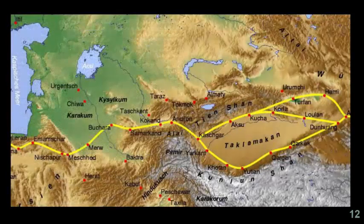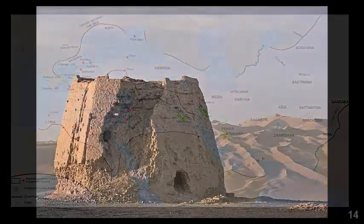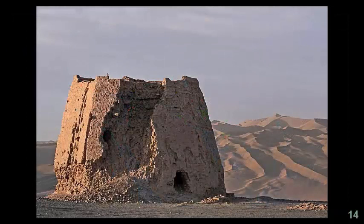Alternatively, land routes eventually linked the ancient Chinese Han dynasty to the consumers of the Roman Empire. The origins of silk routes through Persia date to at least 500 to 330 BC and the Achaemenid Empire. The Persian Royal Road ran from Susa in modern-day Iran to the Mediterranean Sea at ancient Constantinople, or Istanbul, in modern-day Turkey.